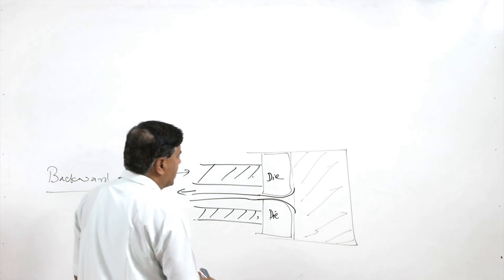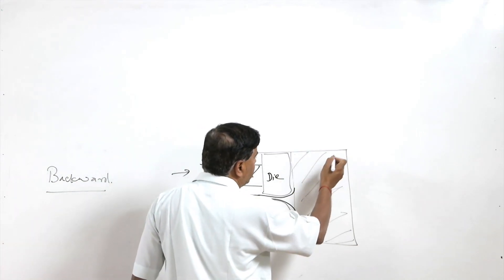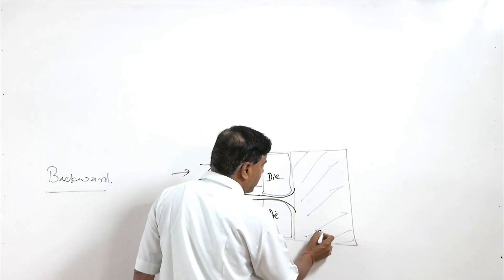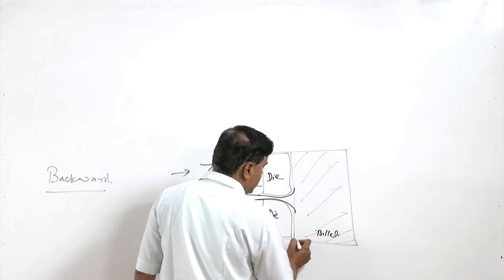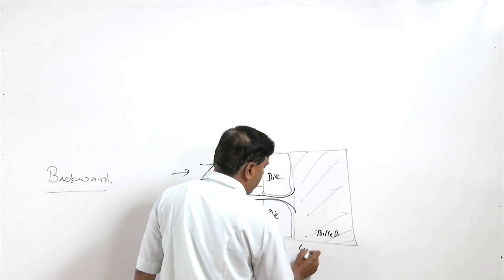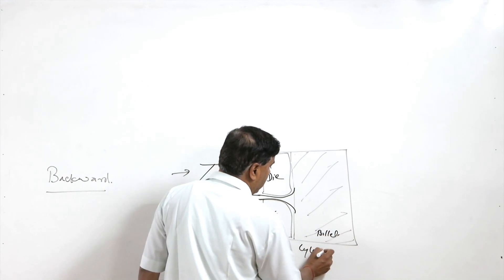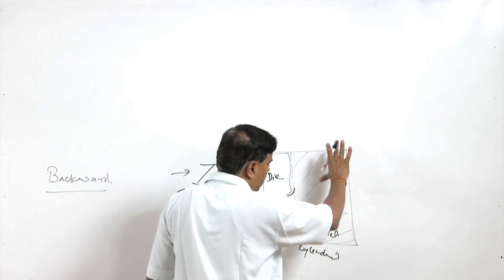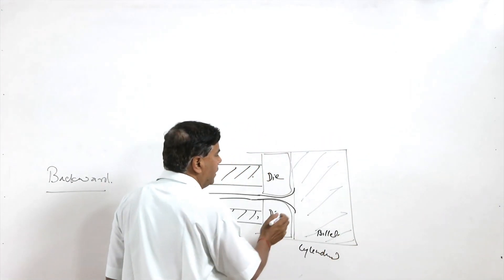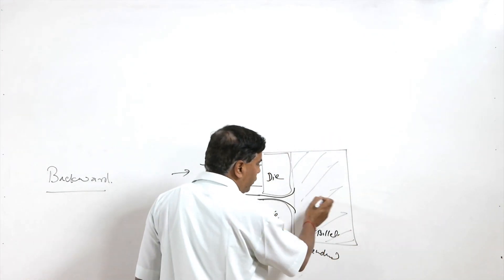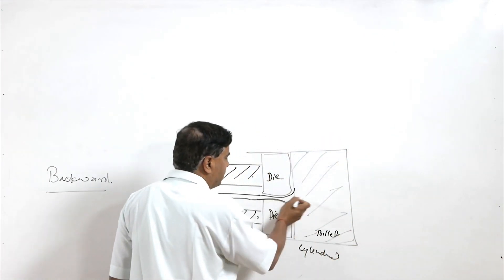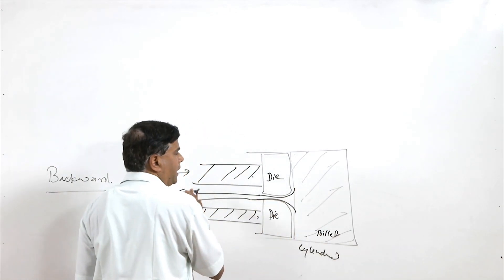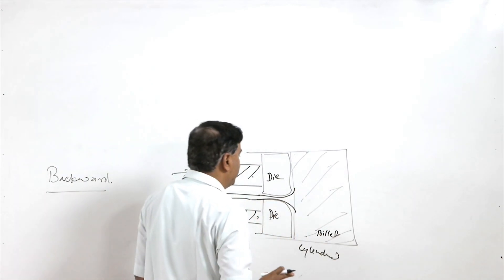In backward extrusion there is no relative movement between the billet and the cylindrical container. The billet is fixed in the cylindrical container and the flow of metal from the billet takes place directly into the die, so there is no relative movement.